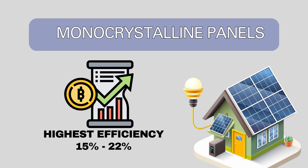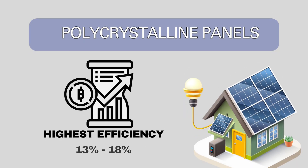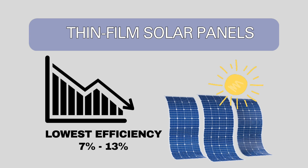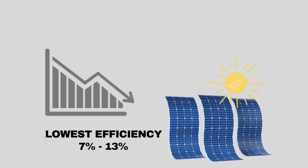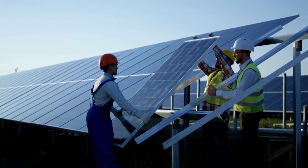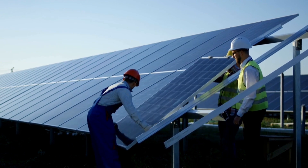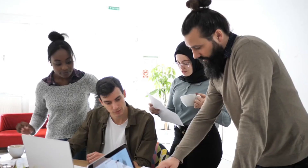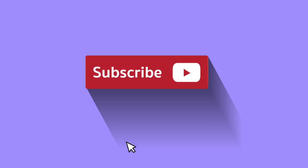Now let's compare the technical specifications of the three types. Monocrystalline panels typically have the highest efficiency, with conversion rates ranging from 15% to 22%. Polycrystalline panels have slightly lower efficiency, ranging from 13% to 18%. Thin film panels have the lowest efficiency, ranging from 7% to 13%. In summary, the choice between monocrystalline, polycrystalline, or thin film solar panels depends on factors such as efficiency requirements, budget constraints, and space availability.